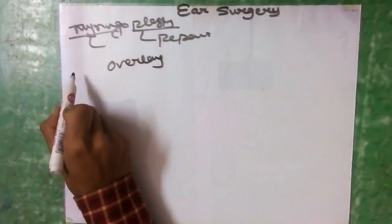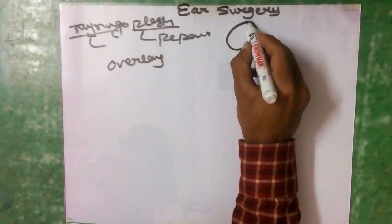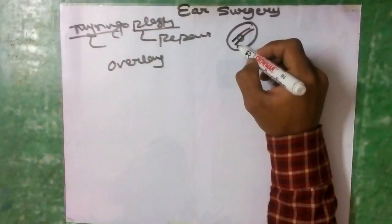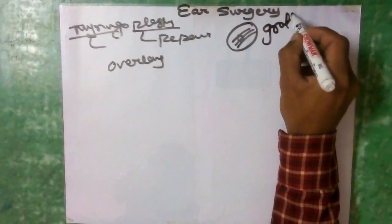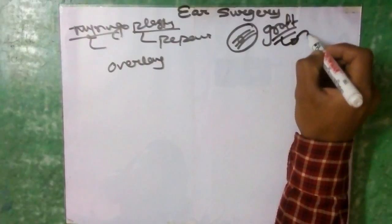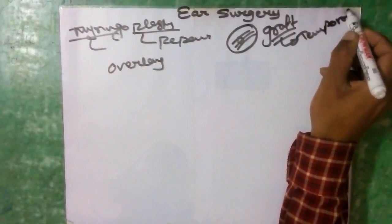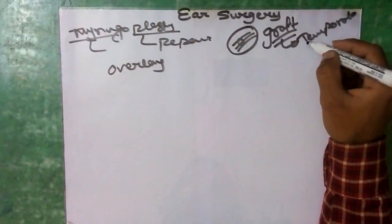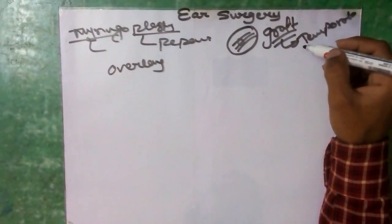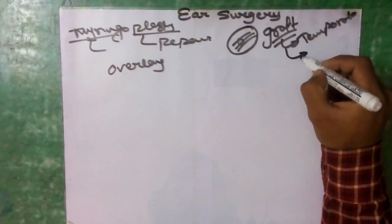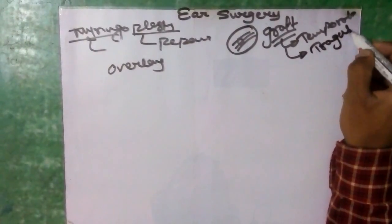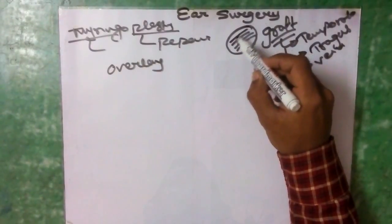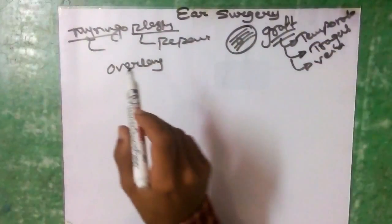In both techniques, a graft is placed to close the perforation in the tympanic membrane. The graft used can be either temporalis fascia — preferred because it has a very low basal metabolic rate and high survival rate — tragus cartilage, or a vein graft. This graft is used to close the perforation.